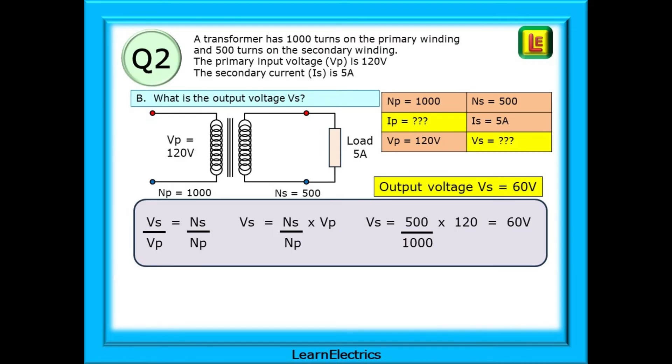Part B asks us to calculate the output or secondary voltage VS. We know the turns ratio NP and NS, and we know the primary voltage VP. It is now just a case of a simple rearrangement of formula number 1 and then put the numbers in. If this is a reducing transformer, the output voltage VS should be smaller than the input, which in fact it is at just 60 volts.